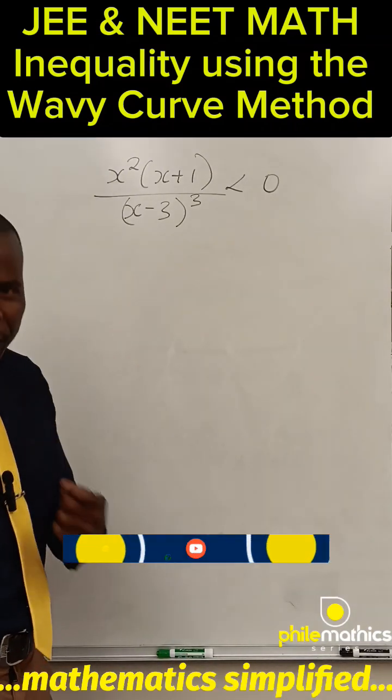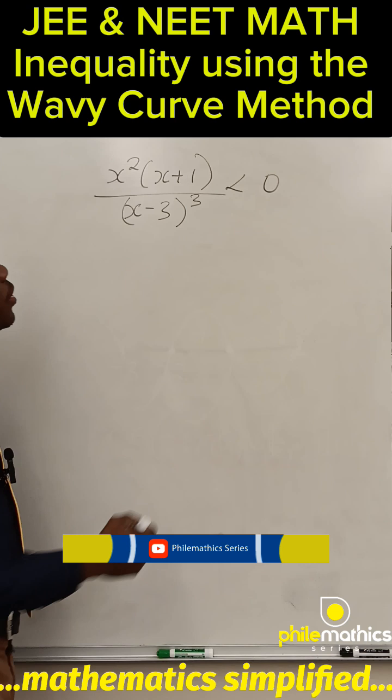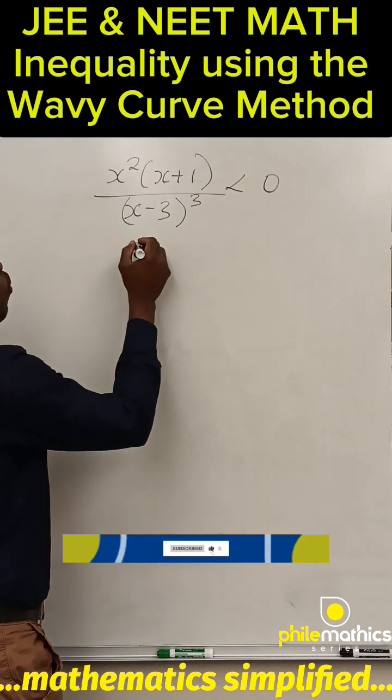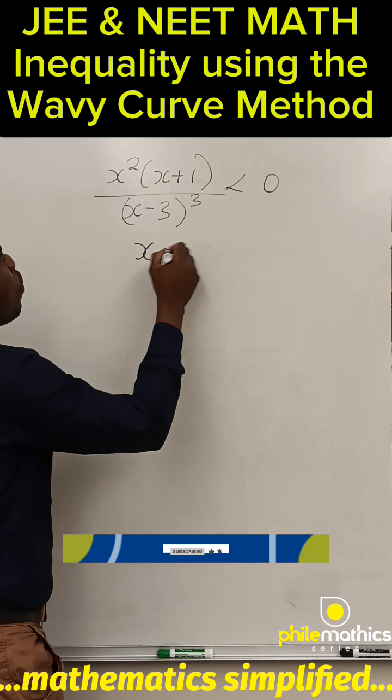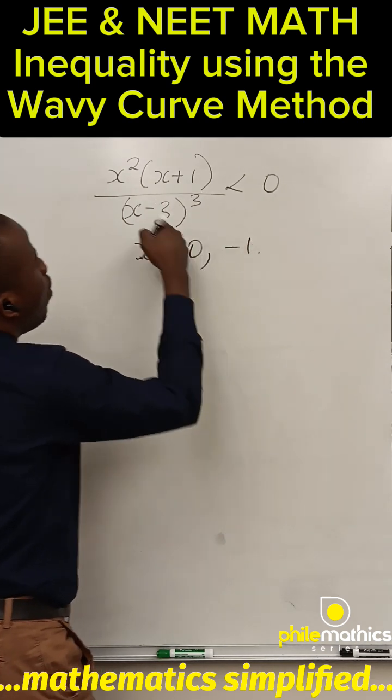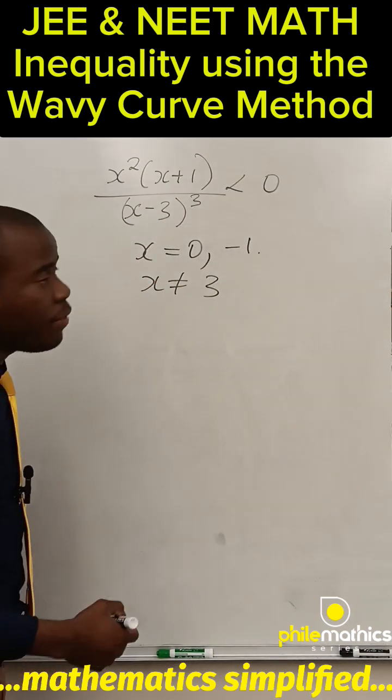Let's solve this using the wavy curve method. The first thing we'll do is find the critical points. The critical points are where these factors equal zero. So for this, x is equal to zero, for this is equal to minus one. But for this, x is not equal to three so that it will not be undefined.